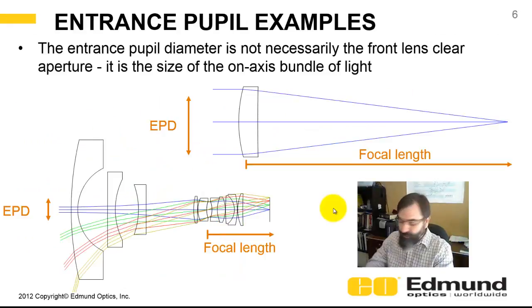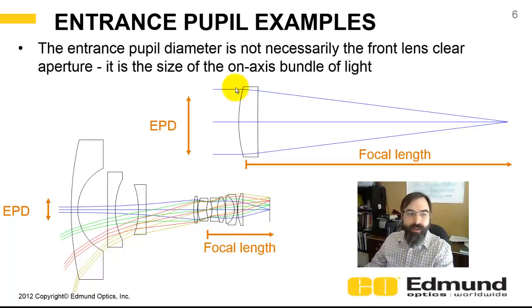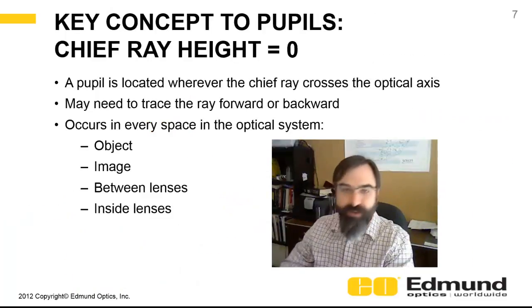Here are some examples of an entrance pupil. A lot of people want to say the front of the lens is the entrance pupil, but that's not really the case. The top example is a singlet, and the aperture stop is generally where that lens is, so you can judge the entrance pupil diameter by the diameter of that lens. In the bottom case, a fisheye lens, the front lens is huge but the entrance pupil is tiny — it's an inverse telephoto and the entrance pupil is buried within the system.